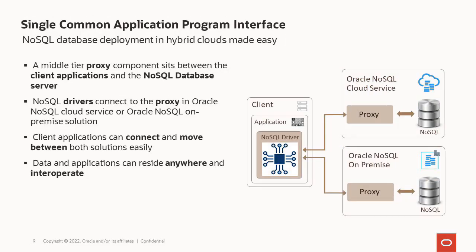One of the great things about our service is that all of our drivers go through what we call a proxy. We use the exact same proxy for our cloud service that we recommend on-premise customers use. This means any application you write will work equally well against the cloud service or on-premise — all you have to do is change your connect string. We do have customers who, for business reasons, keep some data on-premise and some in the cloud, and through a single application they can operate on both.